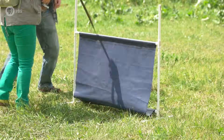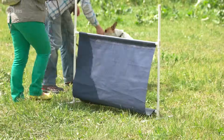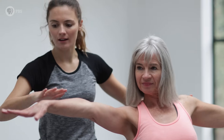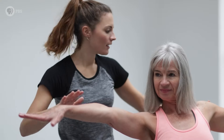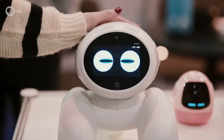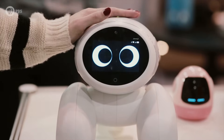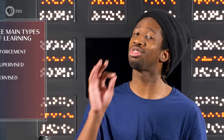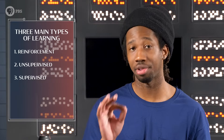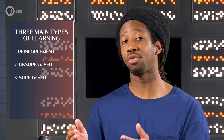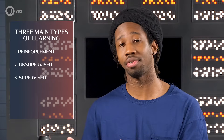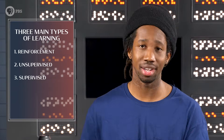The process of learning is how anything can make decisions — like humans, animals, or AI systems. They can adapt their behavior based on their experiences. In Crash Course AI, we'll talk about three main types of learning: reinforcement, unsupervised, and supervised learning.